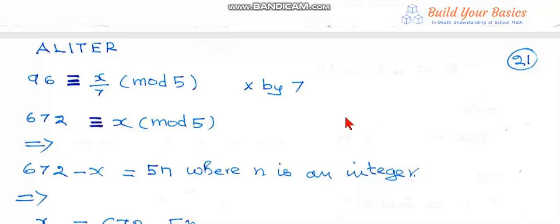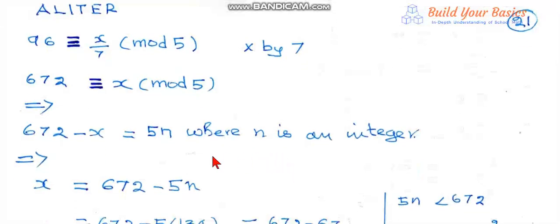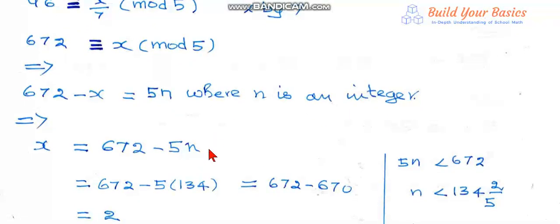That means 672 minus x is equal to 5n, where n is an integer. That implies x equal to 672 minus 5n.